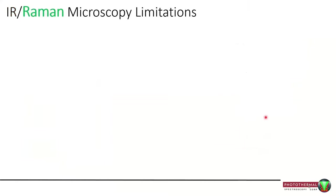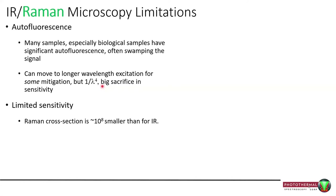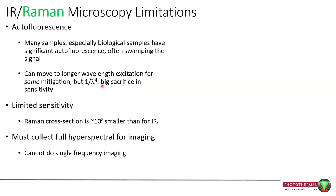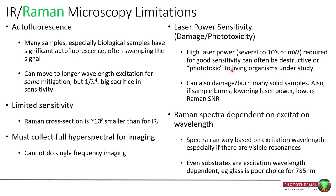When it comes to Raman, by far the biggest issue is autofluorescence, which can often swamp the signal. You can mitigate some of that by going to longer wavelengths, but then you take a massive hit on sensitivity — on top of an already limited sensitivity inherent to Raman. You can't collect single frequencies; you must collect hyperspectral, which can be relatively slow. There are power and sensitivity issues, and Raman spectra themselves can be dependent on excitation wavelengths due to resonances — for example, dyes, inks, or glass substrates.